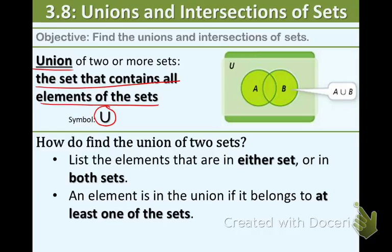And how do we find the union of two sets? What we do is we list the elements that are in either set or in both sets. But if you have an element that's an element of both sets, you do not have to write it twice. An element is in the union if it belongs to at least one of the sets. It does not have to be in both. It has to belong to at least one.